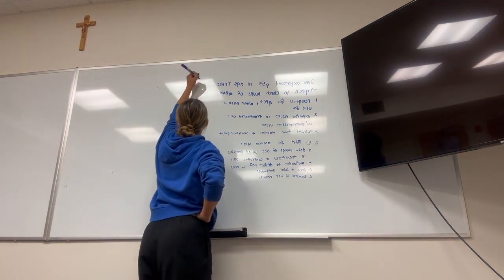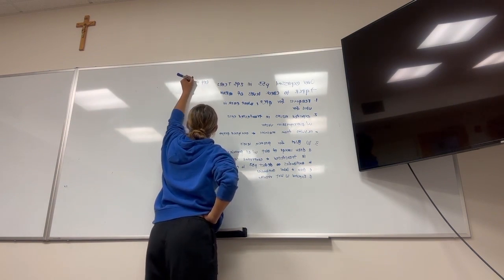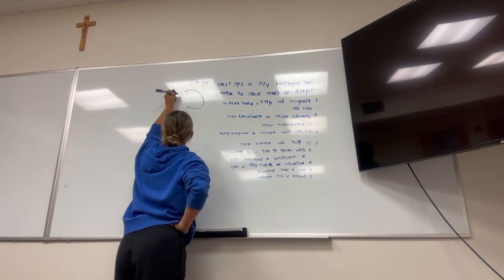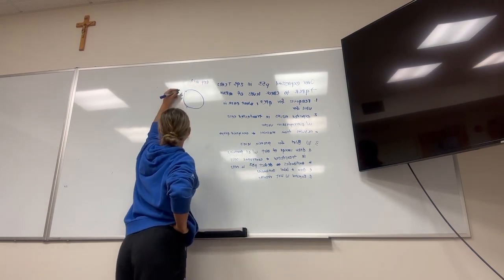First we're going to make an overexpression vector. We're going to buy a vector and each vector has a promoter. I'm going to put little bars to show that's a promoter.